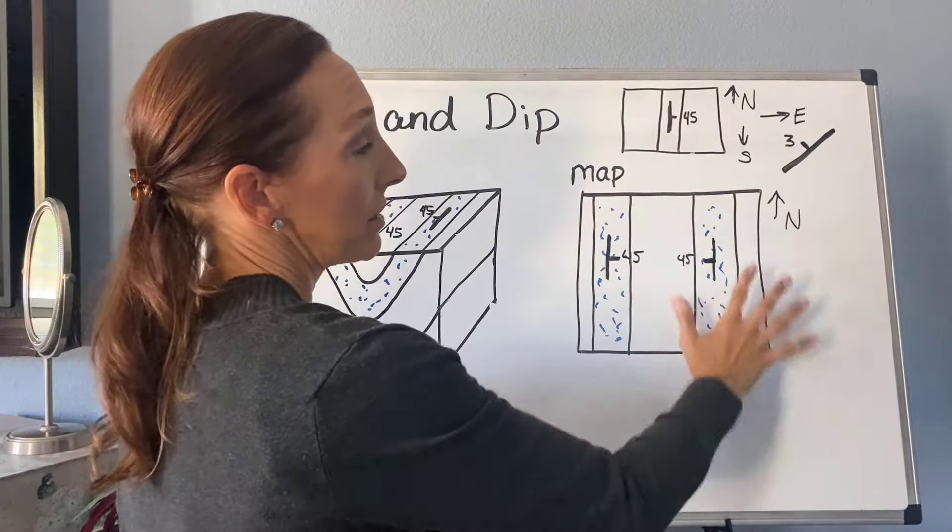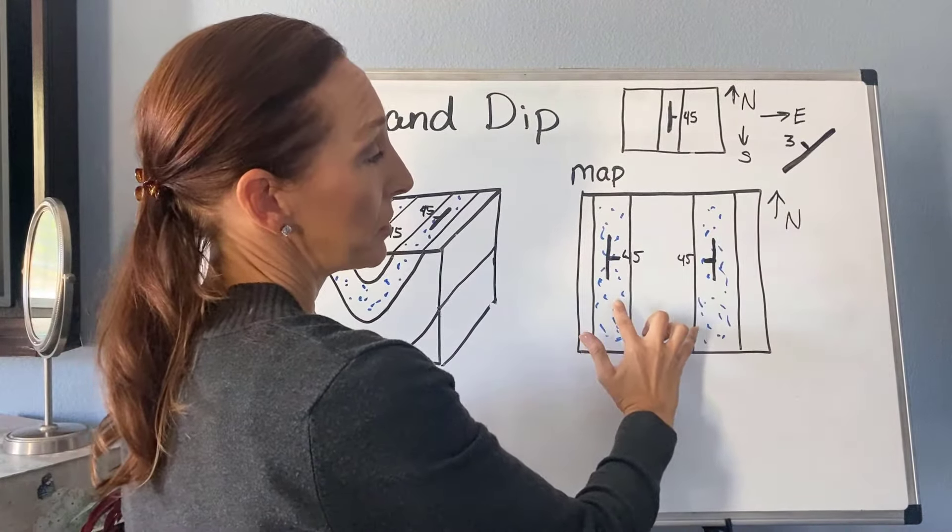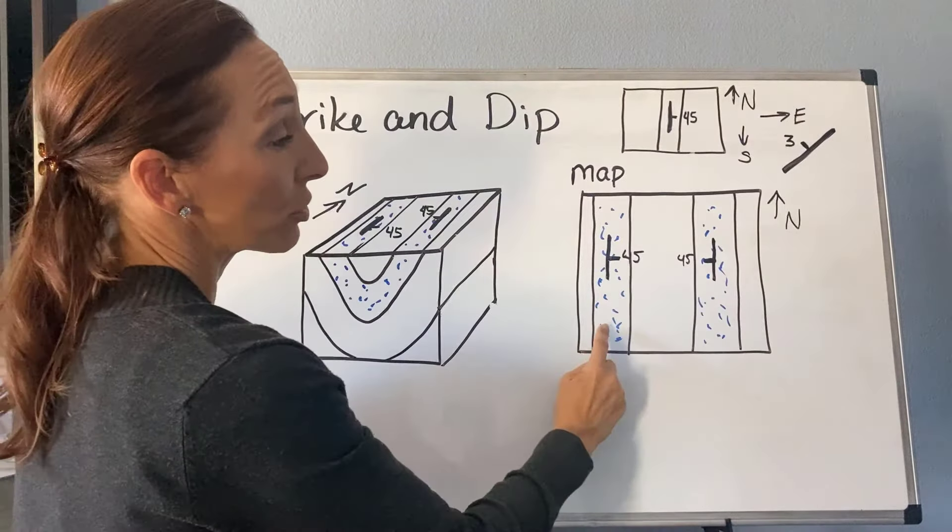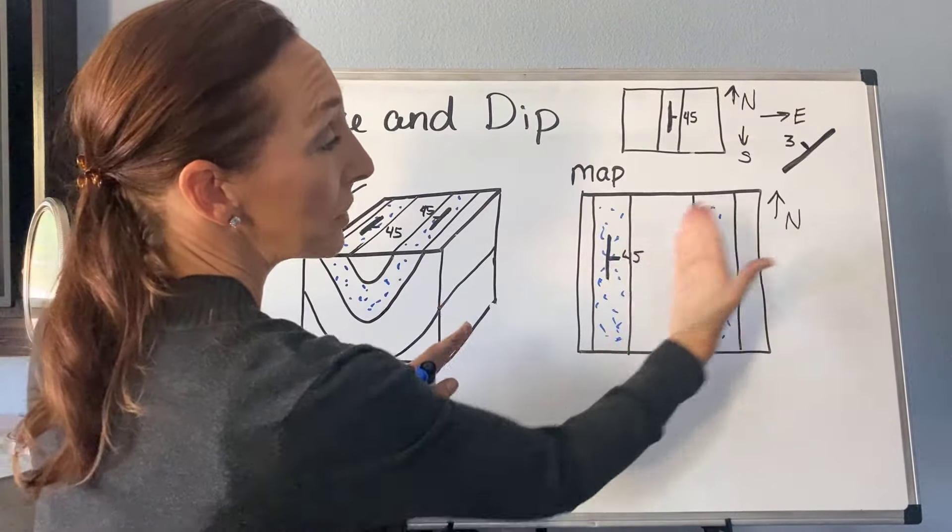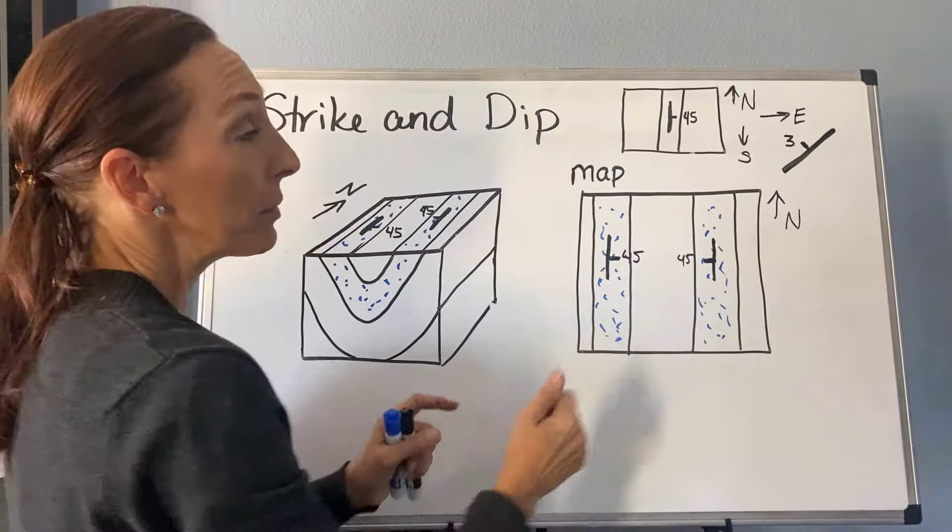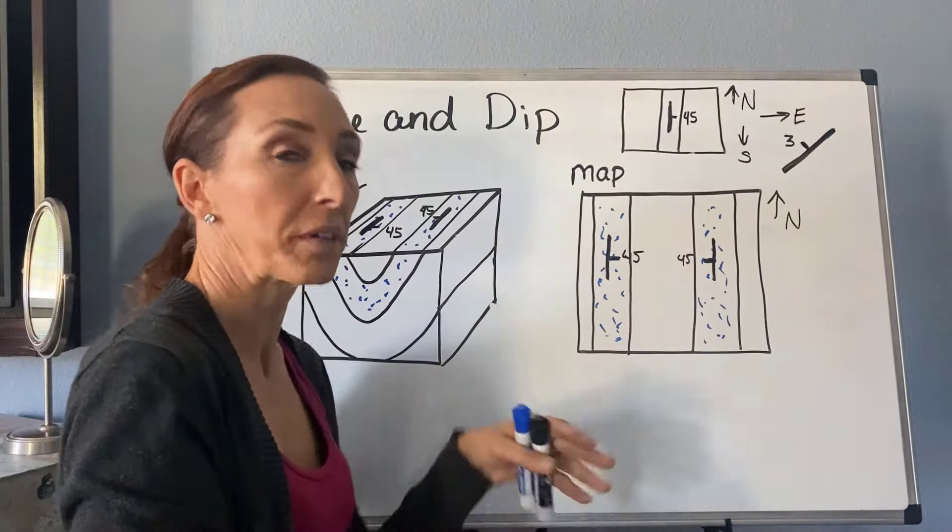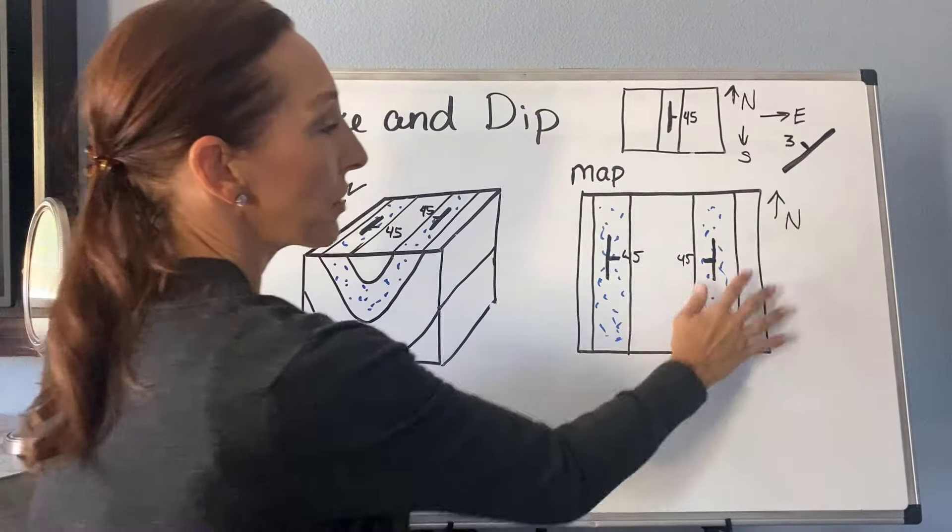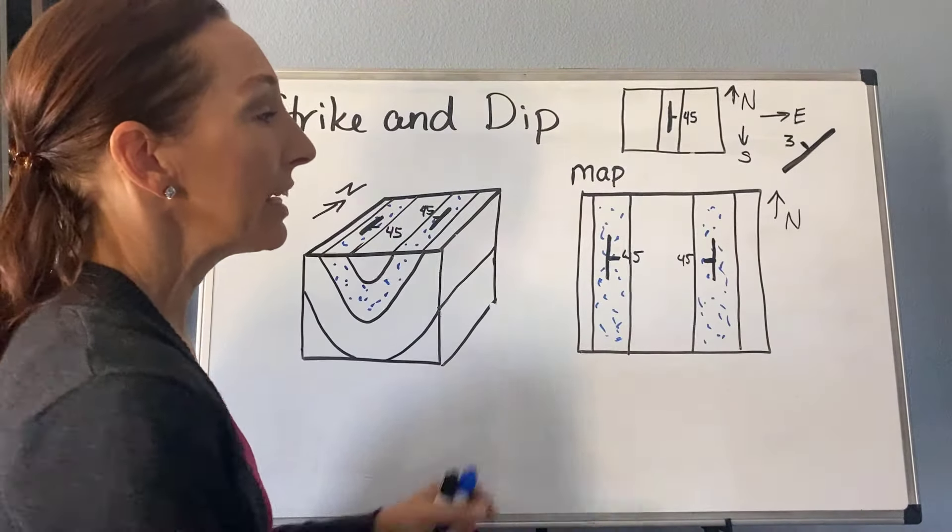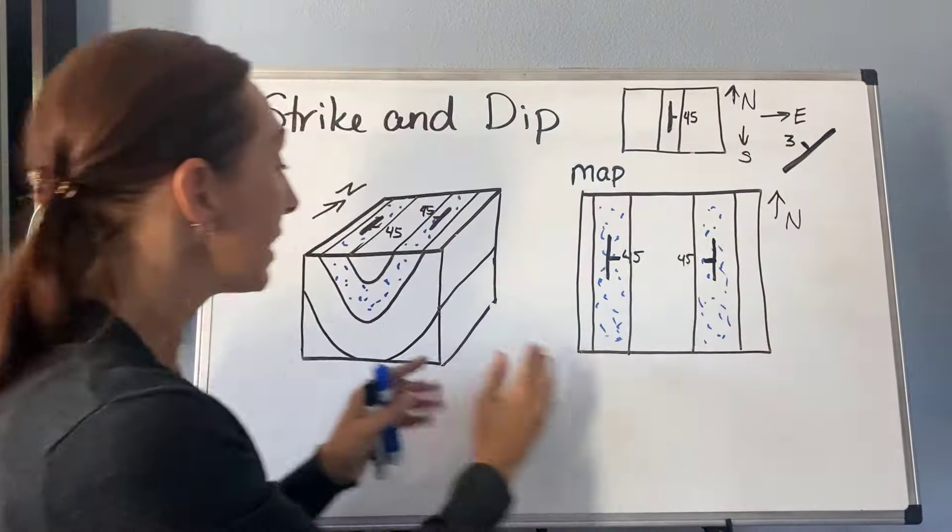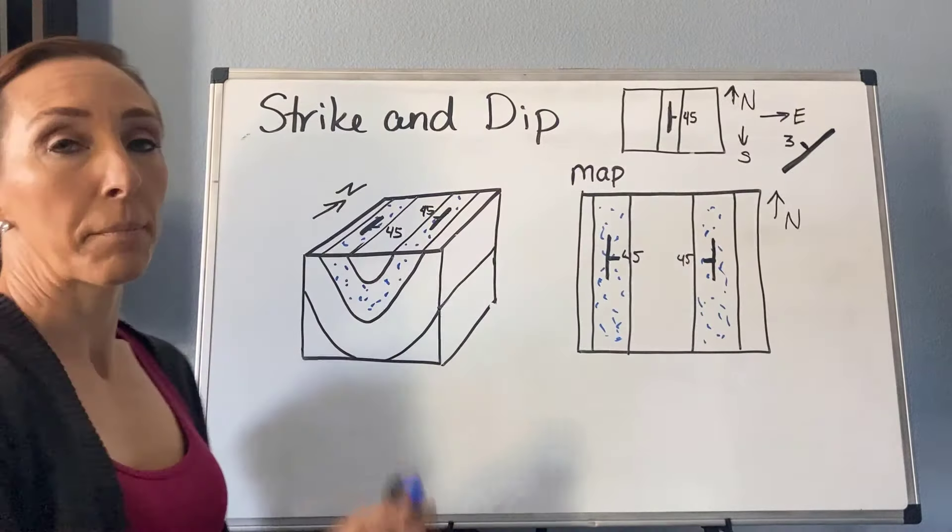If you just ran across this environment and you didn't have the strike and dip symbols, you wouldn't know. Maybe these are two separate beds and they're all dipping in one direction. Or maybe it's the same bed, but it actually comes over the top in a different type of fold we call an anticline. So that's why the strike and dip symbols are really important. It helps us take a map view like this and really be able to visualize what's happening under the surface.